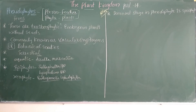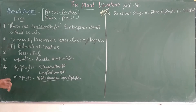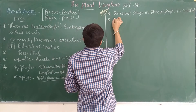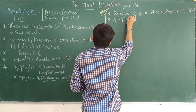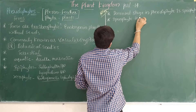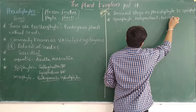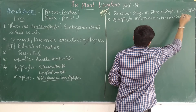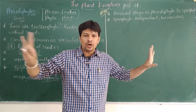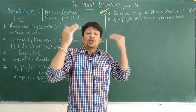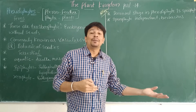The sporophyte of pteridophytes is independent and herbaceous. It can be differentiated into root, stem, and leaves. Being independent means it is not depending on any other organism — not even on the gametophyte. It has the capacity to absorb water and prepare its own food material.